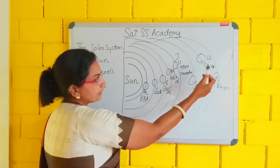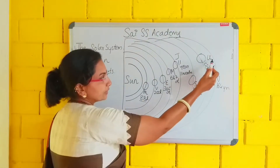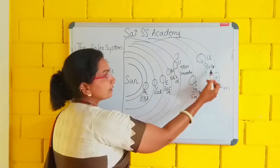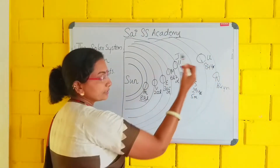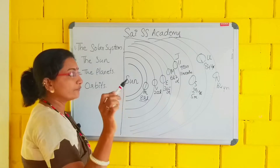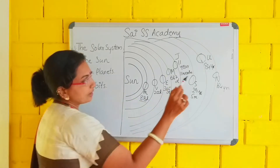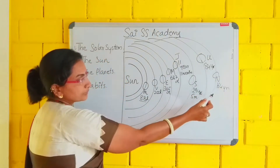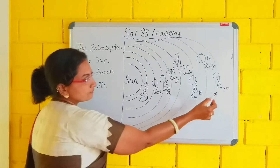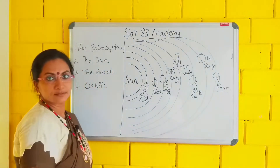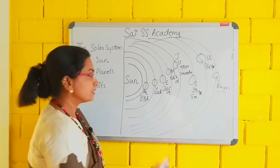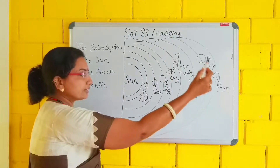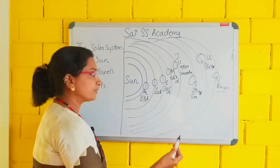The next planet is Uranus. Uranus is taking 84 years. And the last planet is Neptune. Neptune is taking 164 years. These are the distances — that's why they are taking that much time.